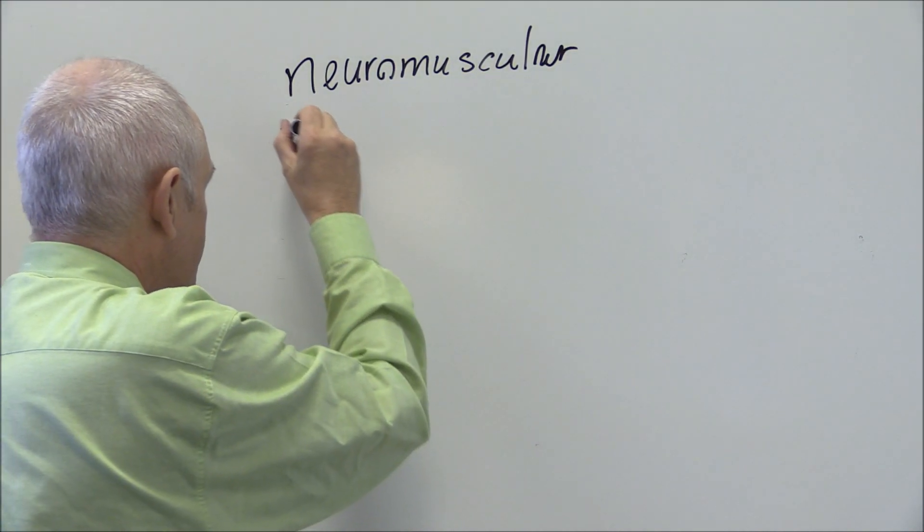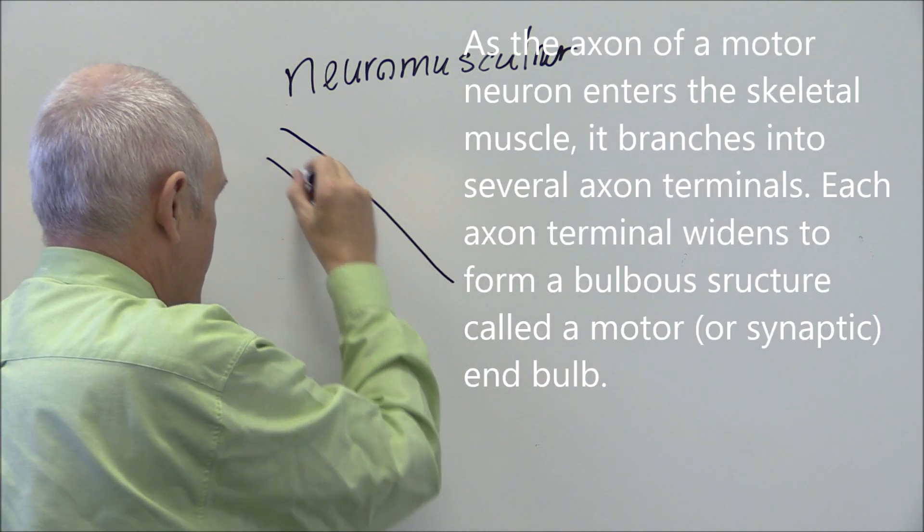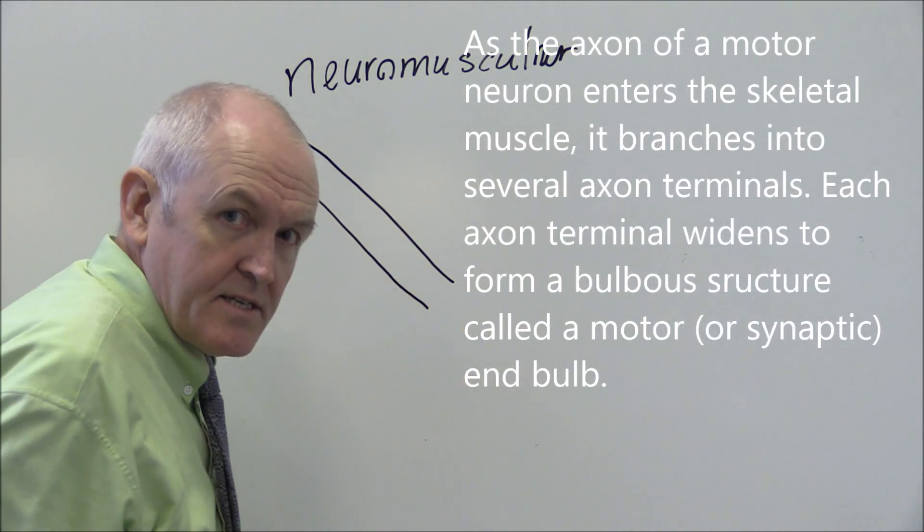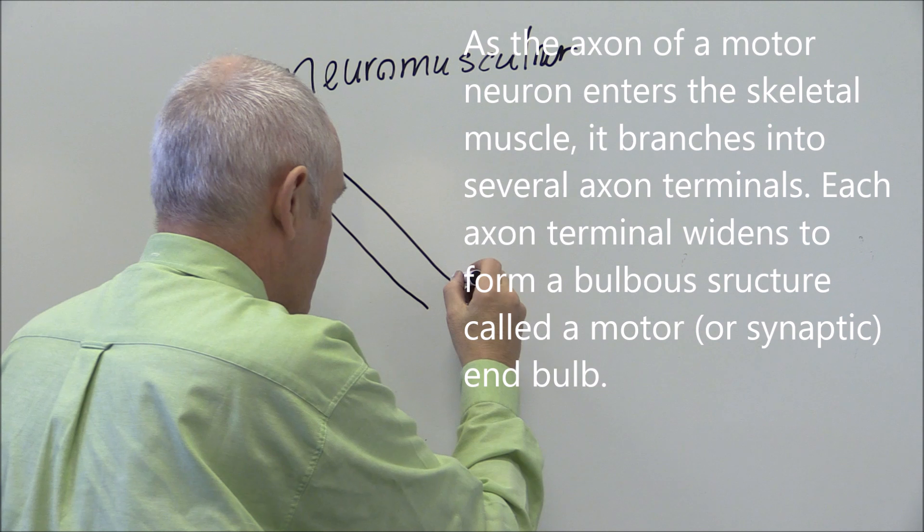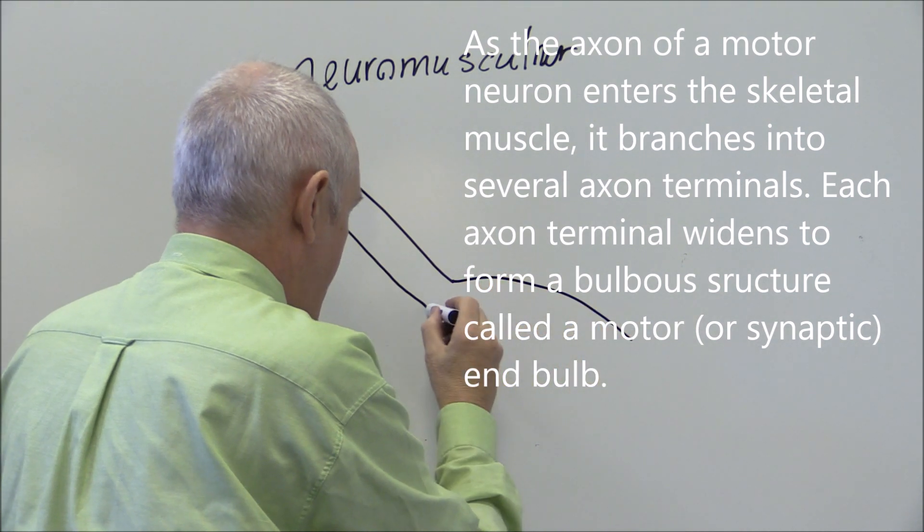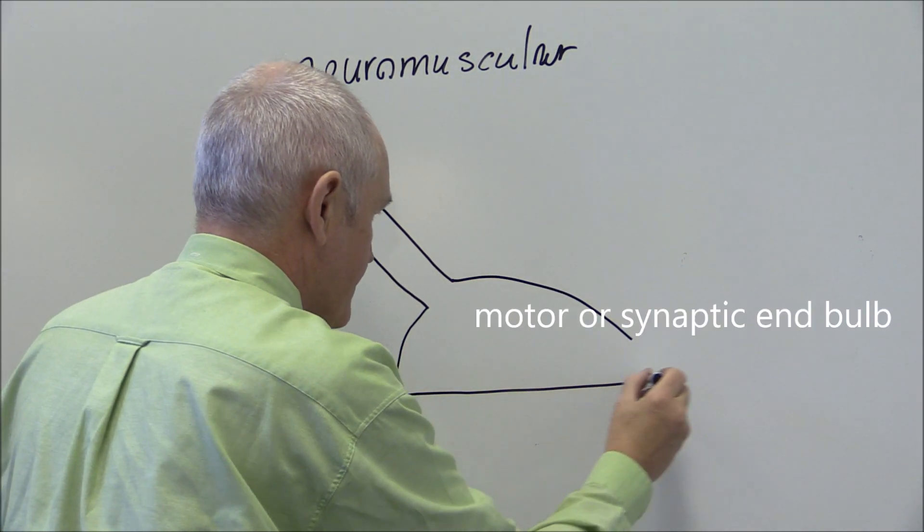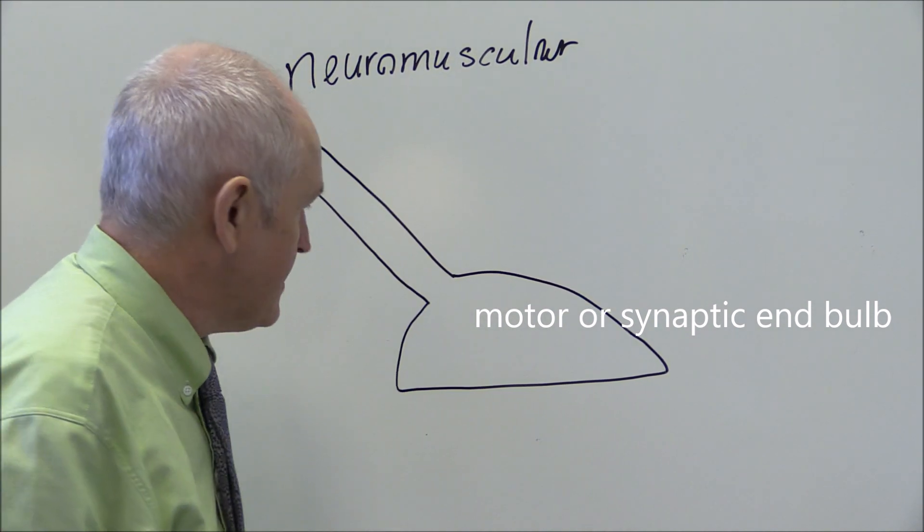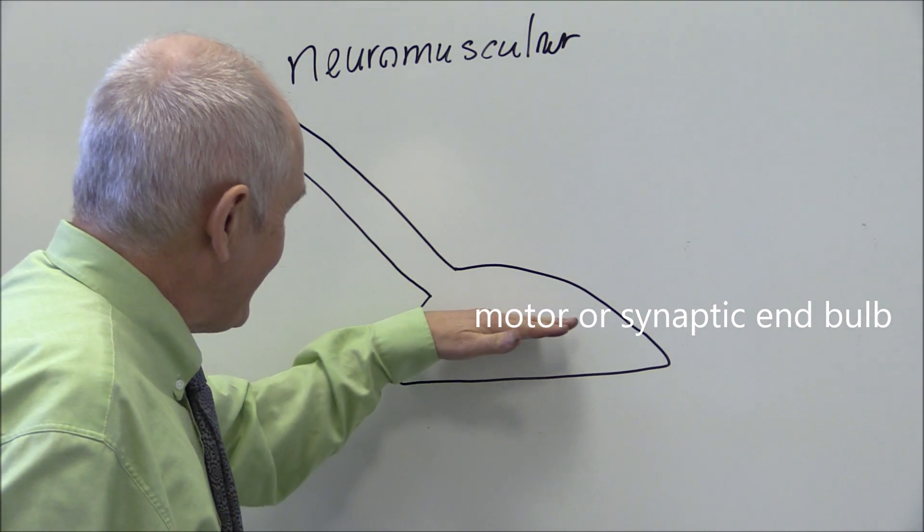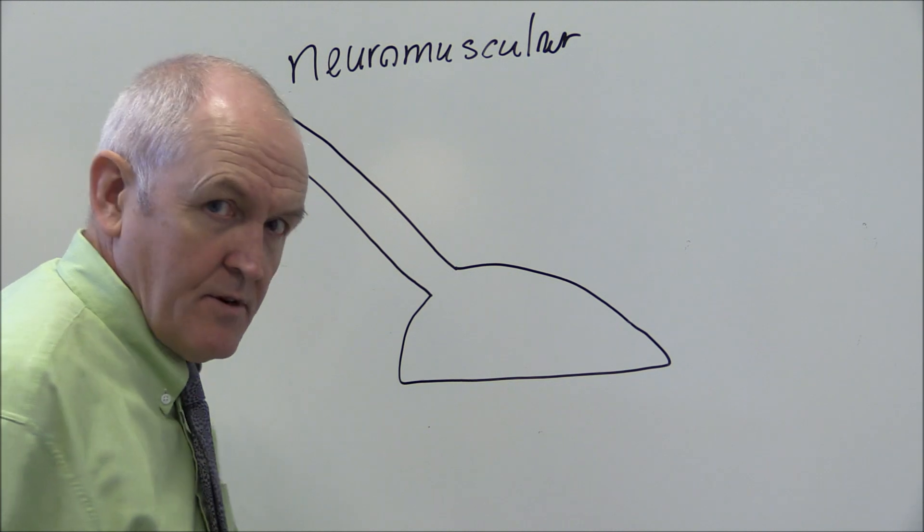So here we have a motor neuron coming down and as it terminates it's going to broaden out into a motor end bulb. So there's a broadened out part at the end of the motor neuron.